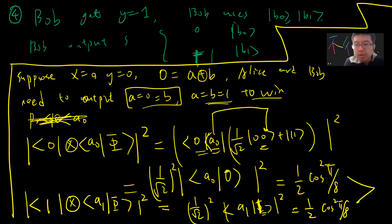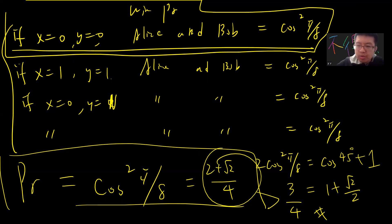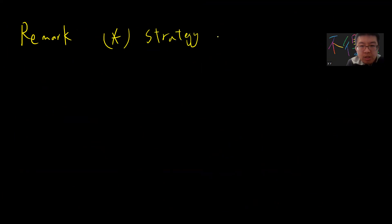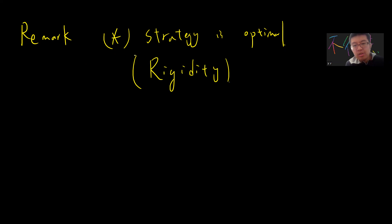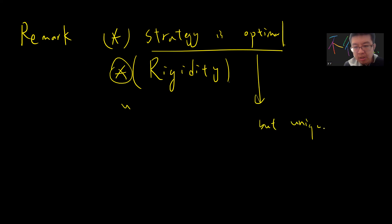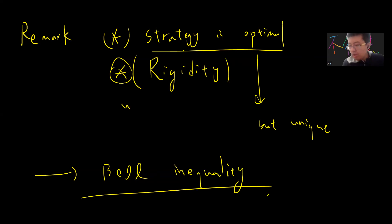This is the CHSH game — a very strange object. If two players can win this game with probability higher than 75%, it means they share some kind of quantum correlation. As a remark, one can prove this strategy is optimal. There is also a concept called rigidity: if there is any other way to achieve this high winning probability, the players must share a Bell pair. So in some sense the strategy is not only optimal but unique. This is deeply related to the Bell inequality, which I will discuss in the next video.